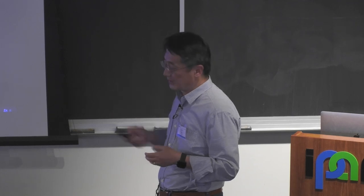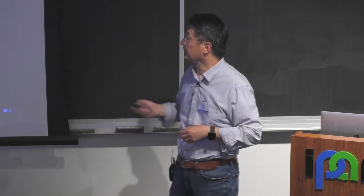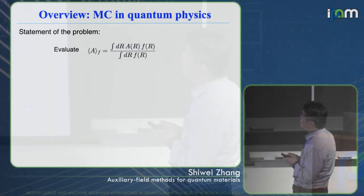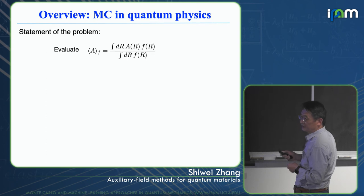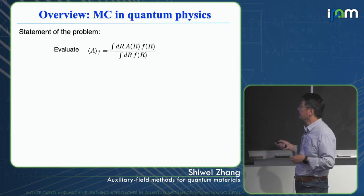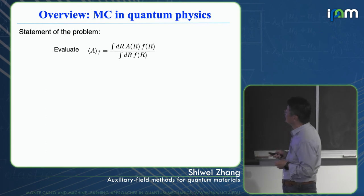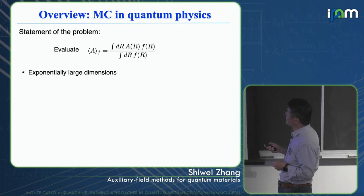I also hope throughout this to show you that we're not hopelessly far away from doing calculations. In terms of Monte Carlo methods in quantum physics, what are we trying to do? Like many other Monte Carlo approaches in various disciplines, we're just trying to compute integrals. We want to evaluate this — done often in exponentially large dimensions.